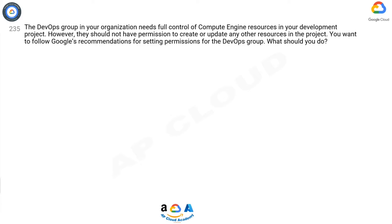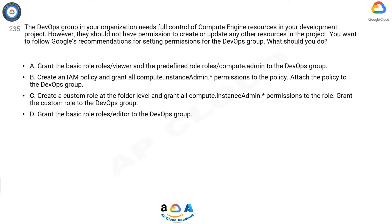Question 235: The DevOps group in your organization needs full control of Compute Engine resources in your development project. However, they should not have permission to create or update any other resources in the project. You want to follow Google's recommendations for setting permissions for the DevOps group. What should you do? A: Grant the basic role roles/viewer and the predefined role roles/compute.admin to the DevOps group. B: Create an IAM policy and grant all compute.instanceAdmin permissions to the policy, then attach the policy to the DevOps group.